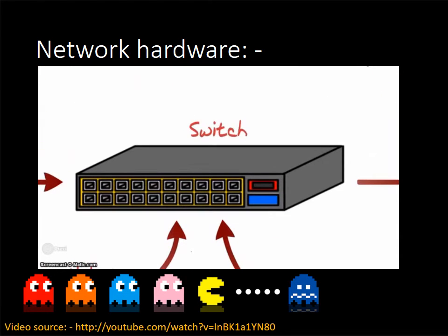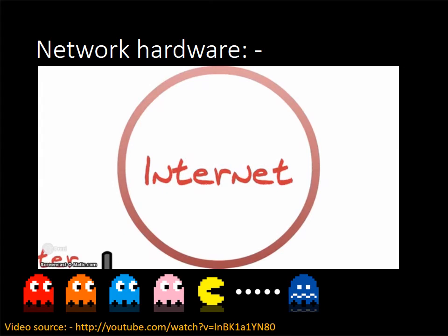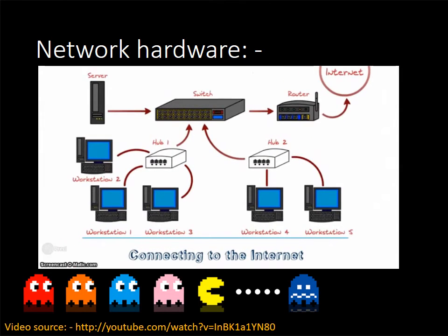Another thing that can be connected to a switch is a router. Where a switch connects all data on a network, routers allow workstations to connect to other devices on other networks via the internet. We all usually have routers set up at home to allow internet access, but they can also be used to connect to other local area networks. Routers can also use bridges and gateways to connect data to similar or different networks. That's a quick overview of some of the hardware used to connect networks together.